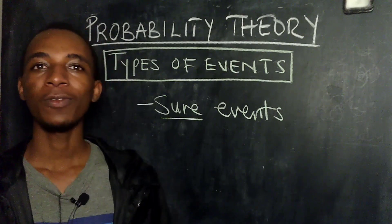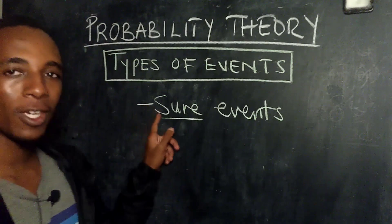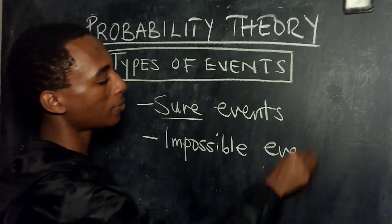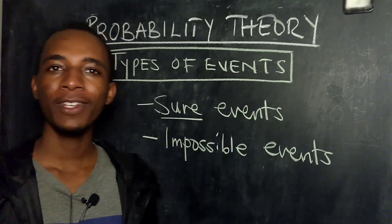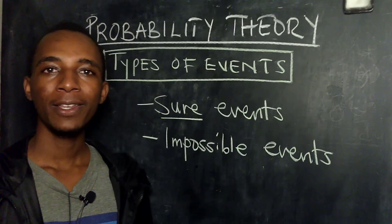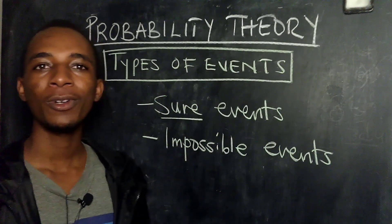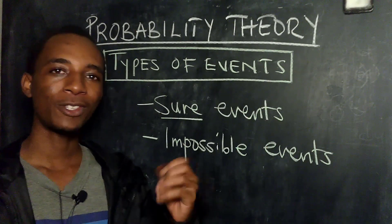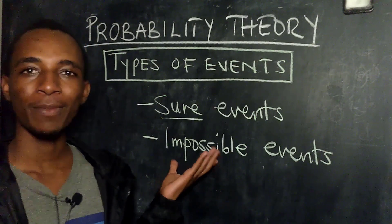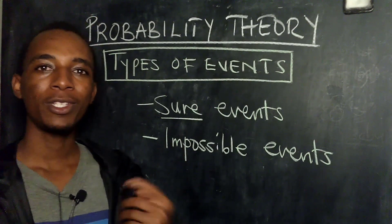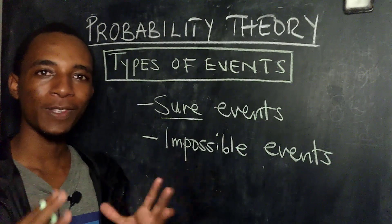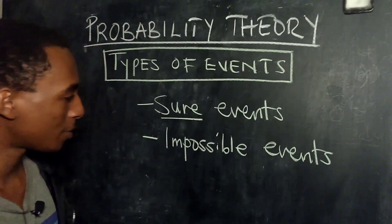Sure events are events with a probability of 1 because they are always going to occur. Speaking of sure events, I should also talk about impossible events. Impossible events are the opposite — they have a probability of 0 because they will never occur. For example, let's say E is the event that you roll a 7 on a dice. You will never roll a 7 on a dice because it has dots from 1 to 6. So impossible events have a probability of 0, while sure events have a probability of 1.